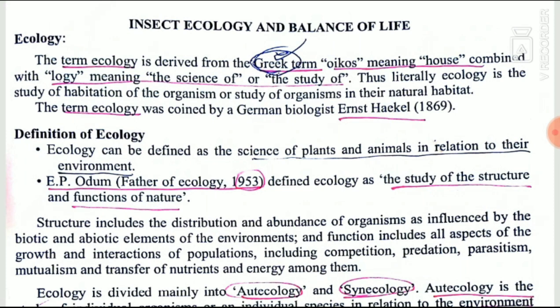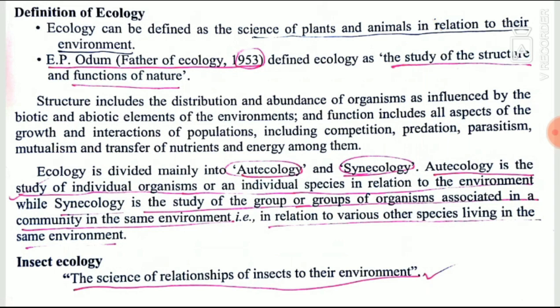The term ecology was first given by Ernest Haeckel in 1869. The father of ecology is Odum, who in 1953 defined ecology as the study of structure and functions of nature. Ecology is broadly divided into autecology and synecology. Autecology is the study of individuals in relation to the environment, and synecology is the study of populations, communities, groups, and organisms with their environment.